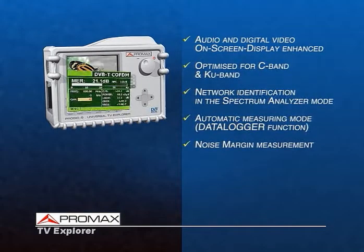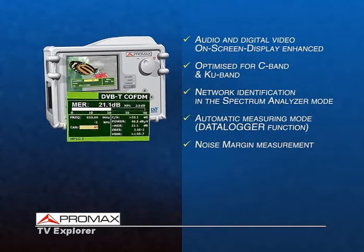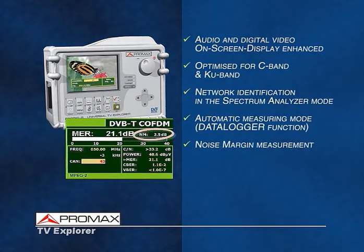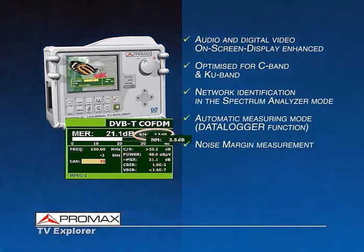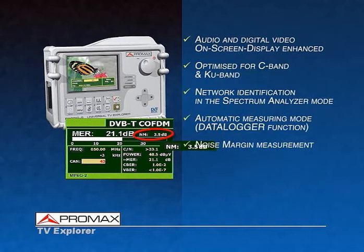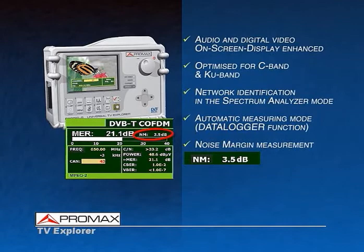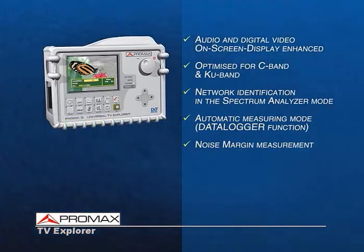Whenever the equipment measures the modulation error ratio (MER), it simultaneously calculates the margin in terms of MER until arriving at the quasi-error-free limit. This new measurement is known as noise margin.